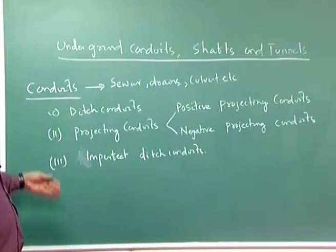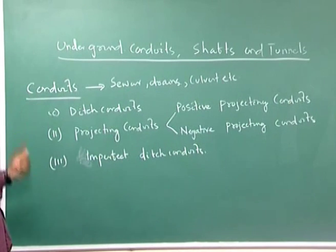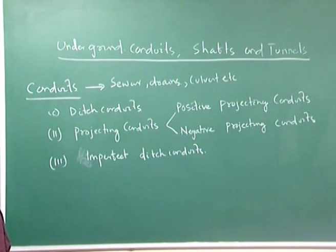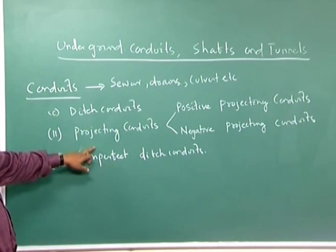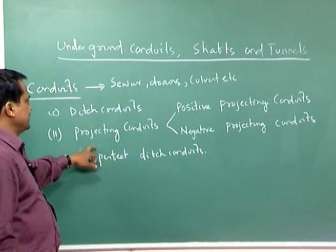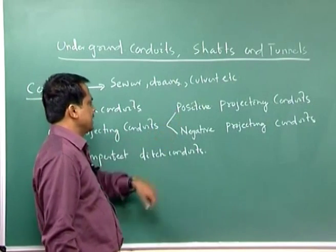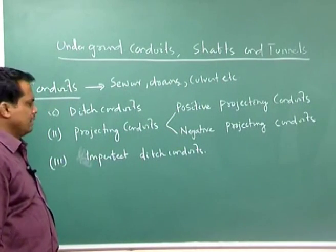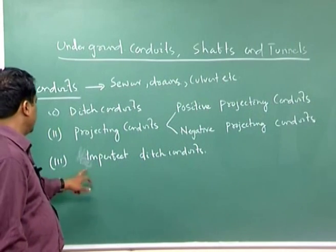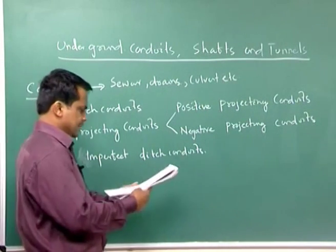Conduits have been classified into three parts. The first is ditch conduits, the second is projecting conduits — which has two sub-types: positive projecting conduits and negative projecting conduits — and the third is imperfect ditch conduits.